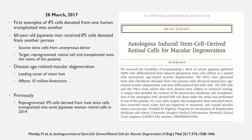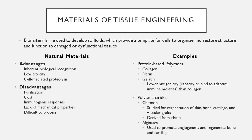Now that we've discussed the main building blocks — cells — we return to the subject of this course: biomaterials used in tissue engineering. Biomaterials are used to develop scaffolds, which provide a template or matrix for cells to organize and restore structurally and functionally damaged or dysfunctional tissues. These materials can be divided into two categories. Natural materials have the advantage of inherent biological recognition through receptor-ligand interactions, cell-mediated proteolysis and remodeling, and low toxicity. Classic examples include protein-based natural materials such as collagen, gelatin, fibrin, elastin, and silk.